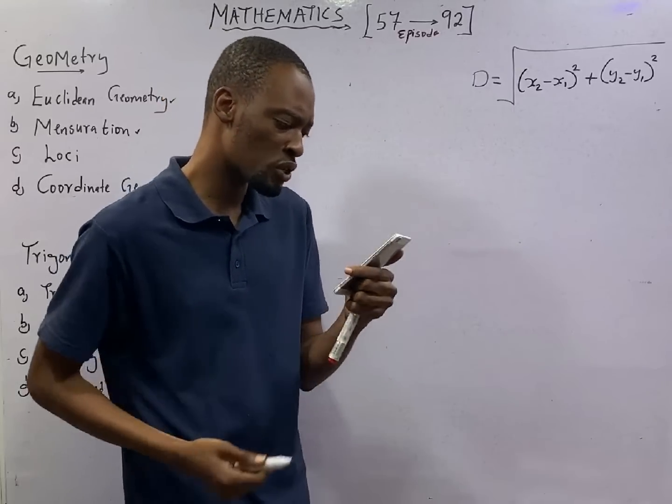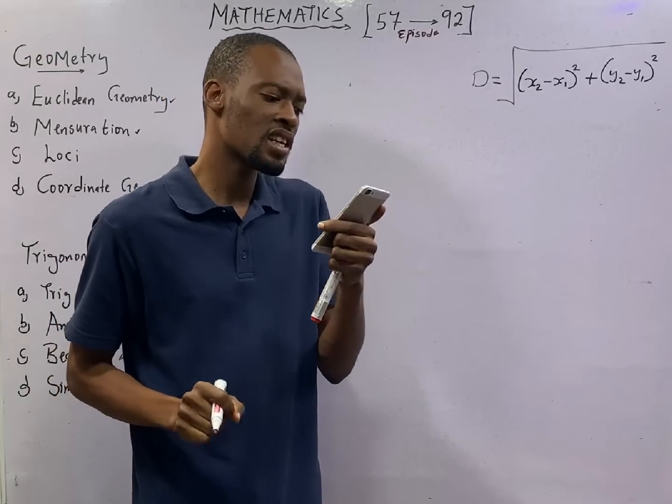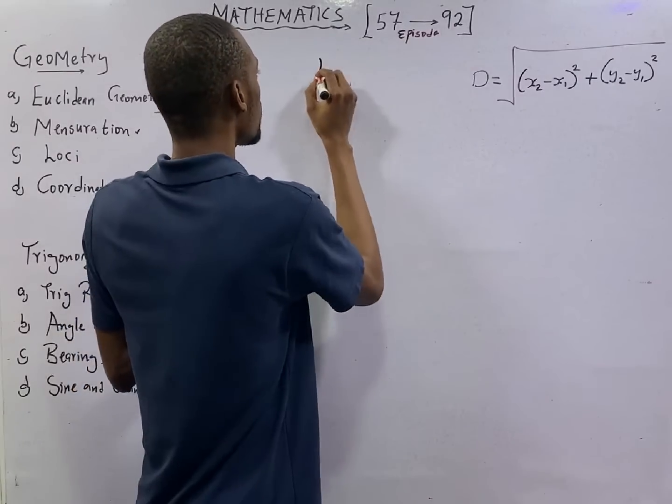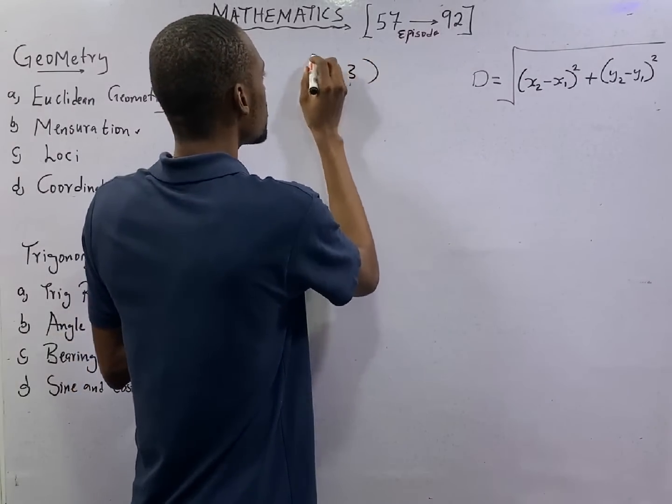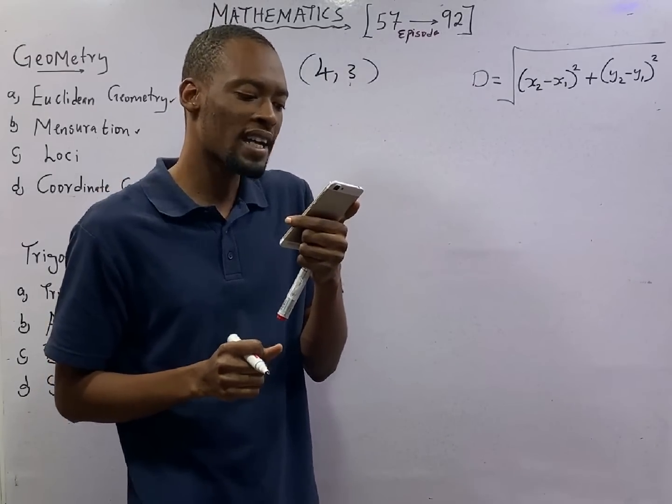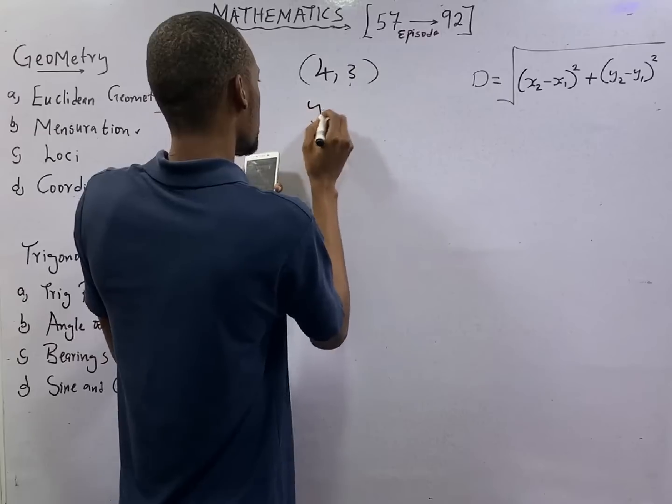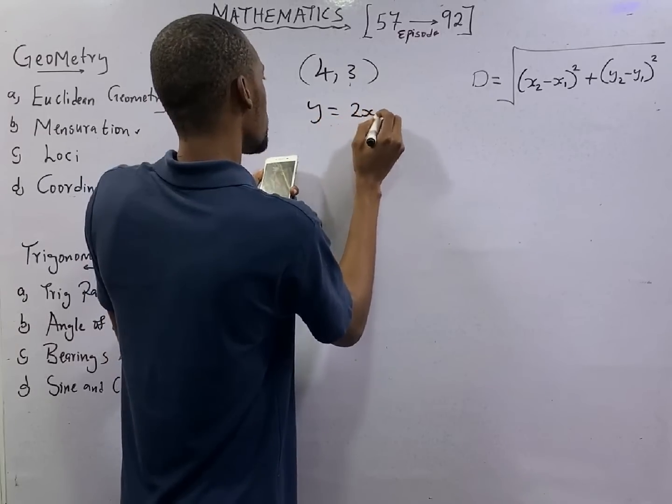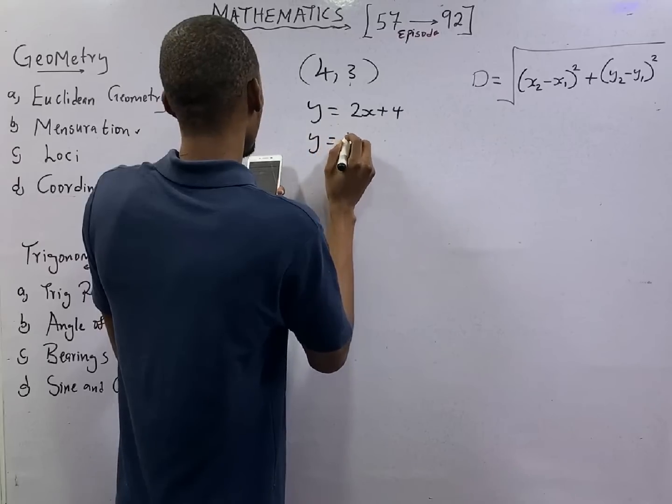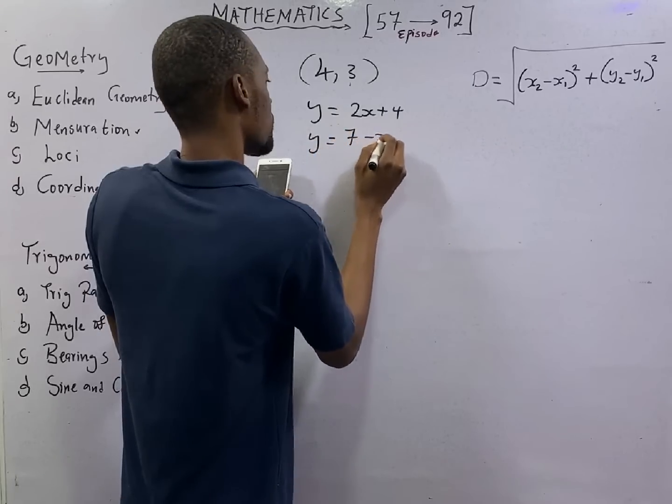But let us look at this question. It says find the distance between point (4, 3) and the intersection of y equals 2x plus 4 and y equals 7 minus x.